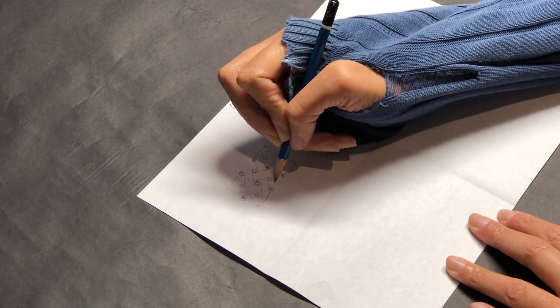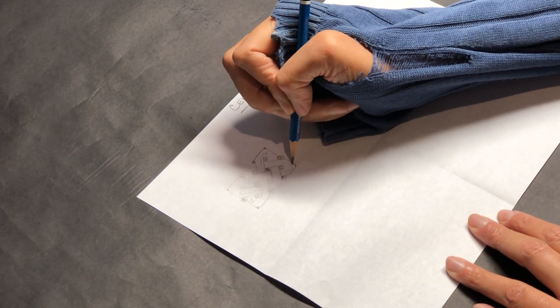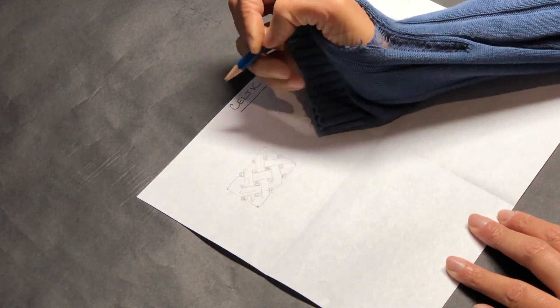Next, connect the middle weave. Notice I'm showing where it goes under and where it goes over.